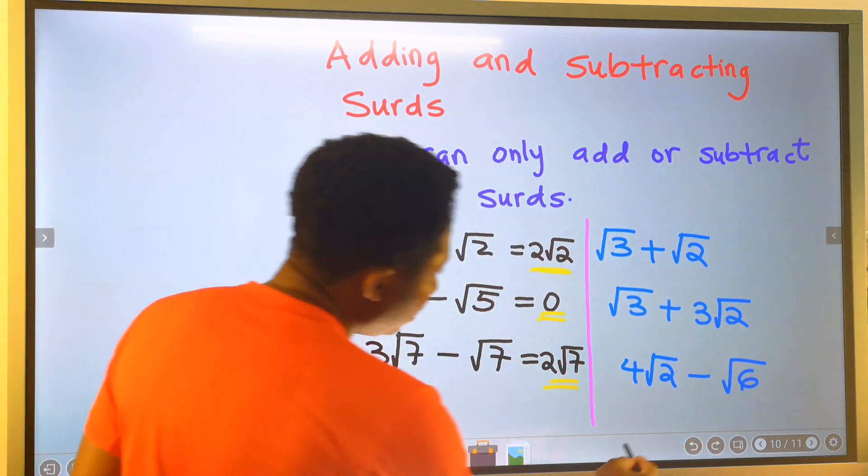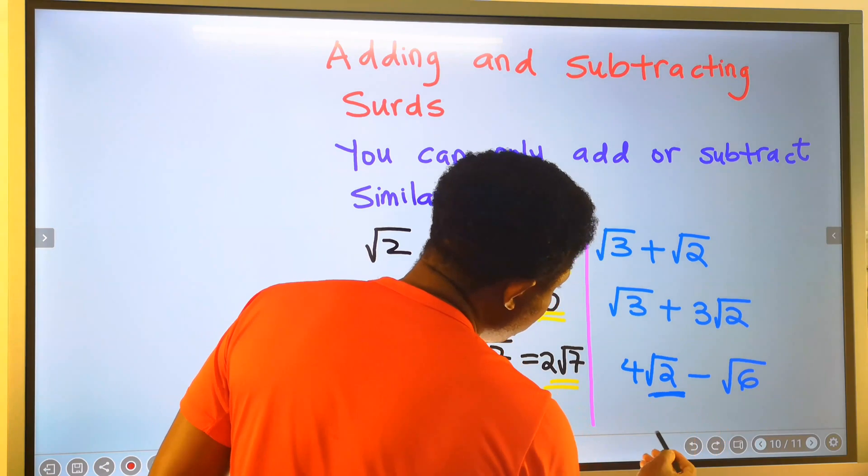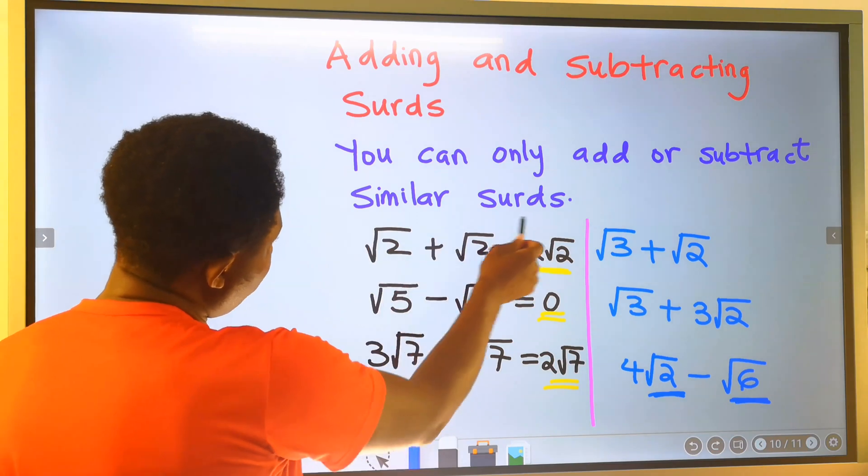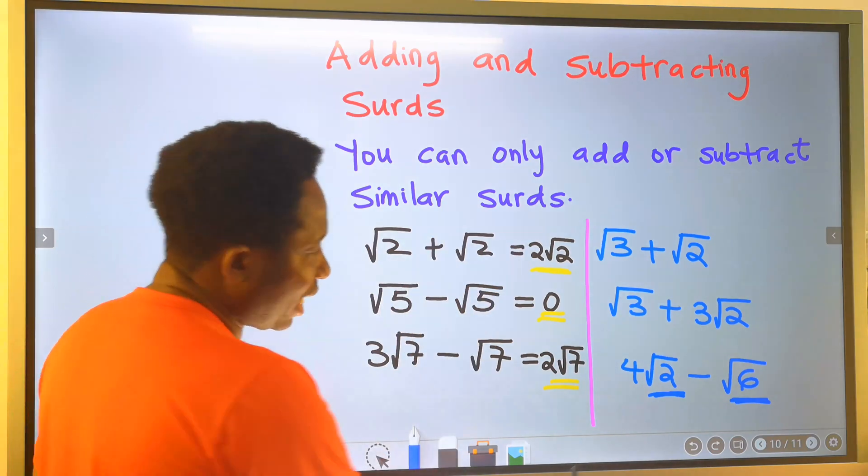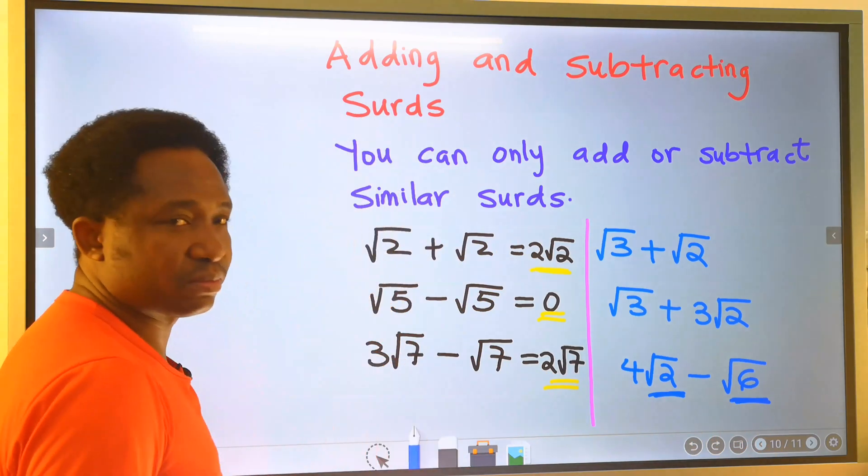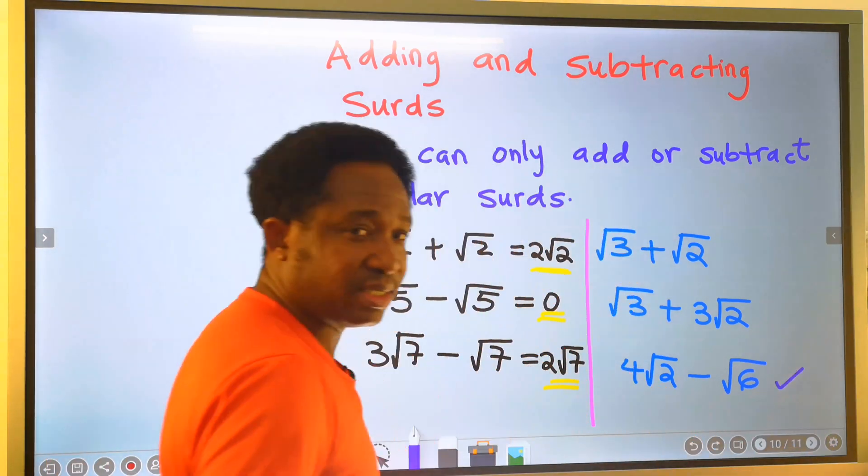Because this is root 2 and this is root 6, they are not similar. We cannot add or subtract both. This is a final answer.